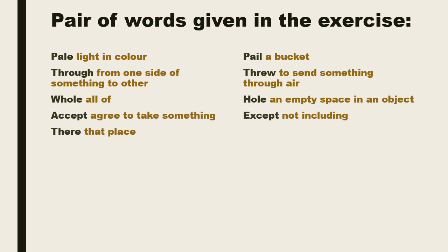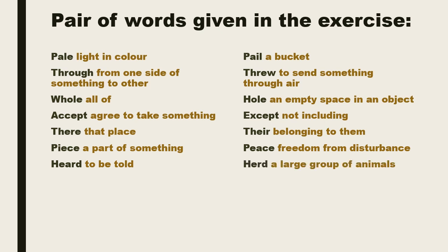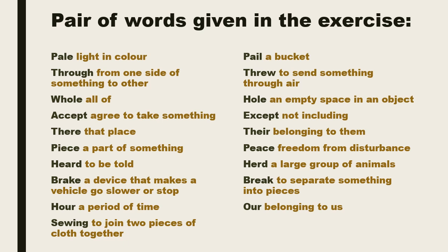There, which means that place. And their, which is used for belonging to them. Peace, a part of something — and piece, freedom from disturbance. The next word heard, used for to be told, and herd, a large group of animals. The next one is brake, a device that makes a vehicle go slower or stop. The other one, break, means to separate something into pieces, or a period of time. And our, belonging to us. The next one is sewing, to join two pieces of cloth together, and sowing, to put seeds in the ground.